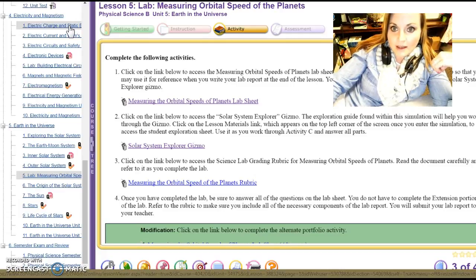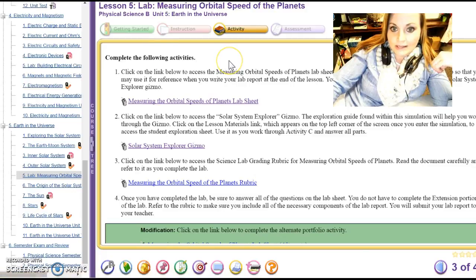First of all I want you to notice that I have up on the screen your lesson viewer for the portfolio. Lesson five from unit five, and you'll notice that the last unit in physical science is on astronomy, so we're kind of ending off a little differently applying some of those physical science concepts that you've learned throughout the school year.